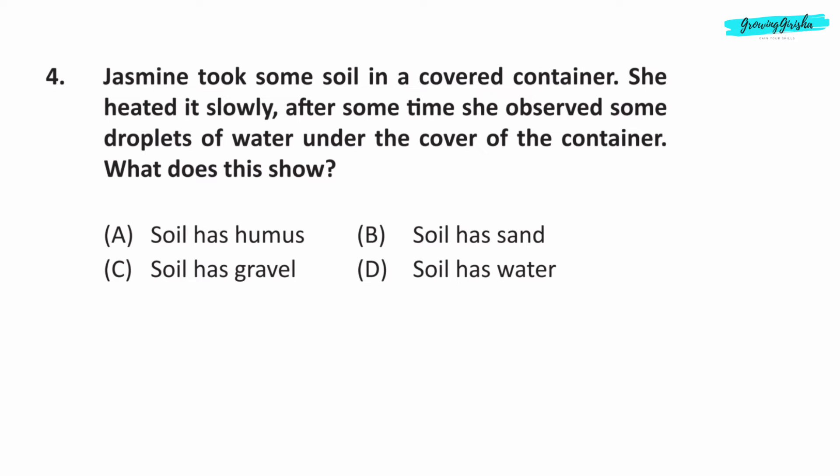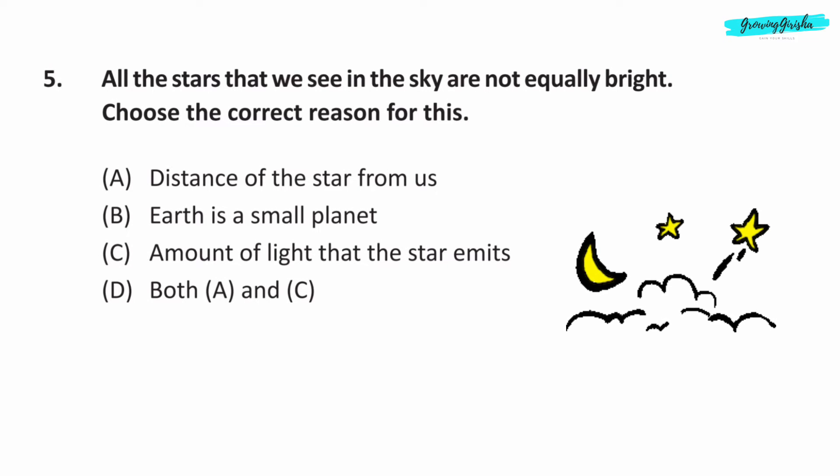Question 4. Jasmine took some soil in a covered container. She heated it slowly. After some time, she observed some droplets of water under the cover of the container. What does this show? Question 5. All the stars that we see in the sky are not equally bright. Choose the correct reason for this. Option A: Distance of the star from us. This is correct. Option B: Earth is a small planet. This is incorrect. Option C: Amount of light that the star emits. Yes, this is correct. So correct reasons are option A and C. So answer is option D.